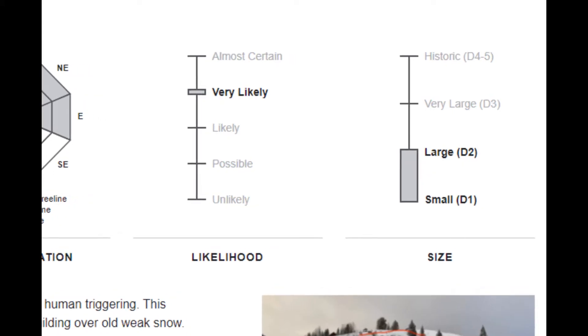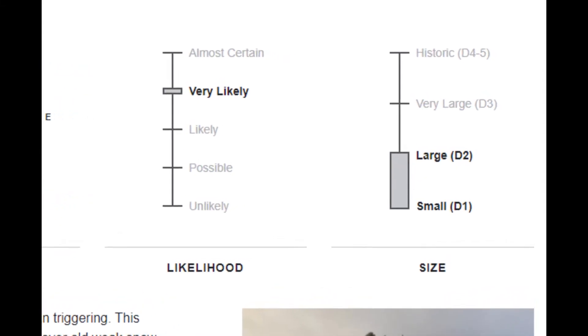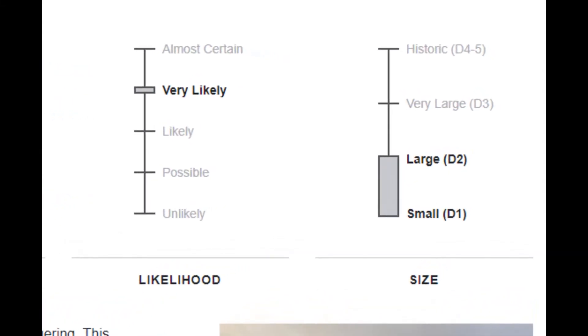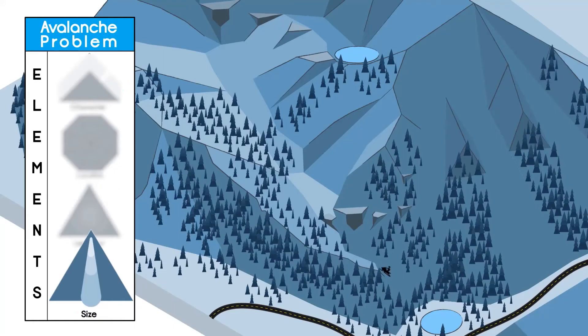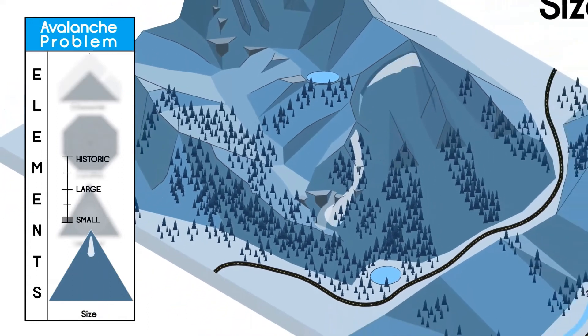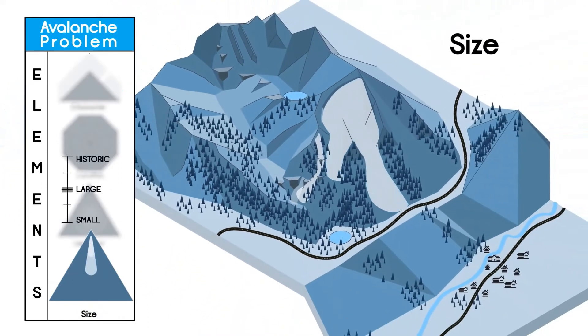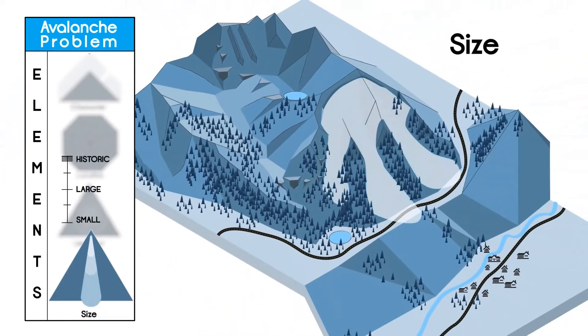The size slider shows the expected destructive potential of avalanches that day. We show the expected range of sizes to include the largest potential avalanche for the problem in question. Outliers are possible.